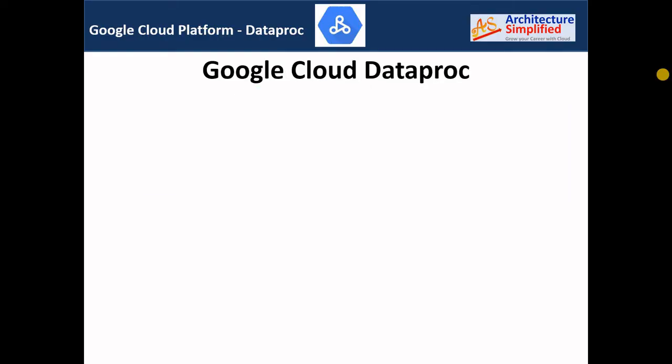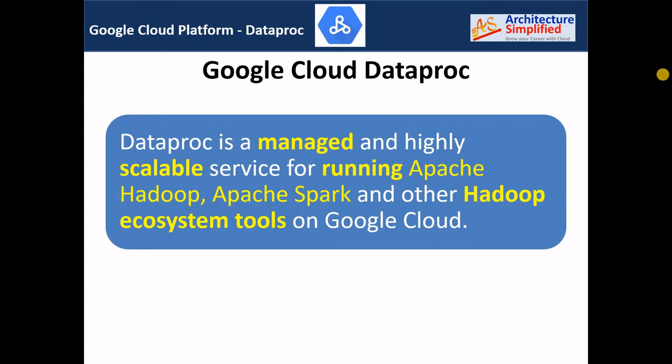There are a few Hadoop limitations which are also addressed by Google Cloud Dataproc. Dataproc is a managed and highly scalable service for running Apache Hadoop, Apache Spark, and other Hadoop ecosystem tools on Google Cloud. There are many highlighted points in this definition of Dataproc, so let's understand each one in detail.